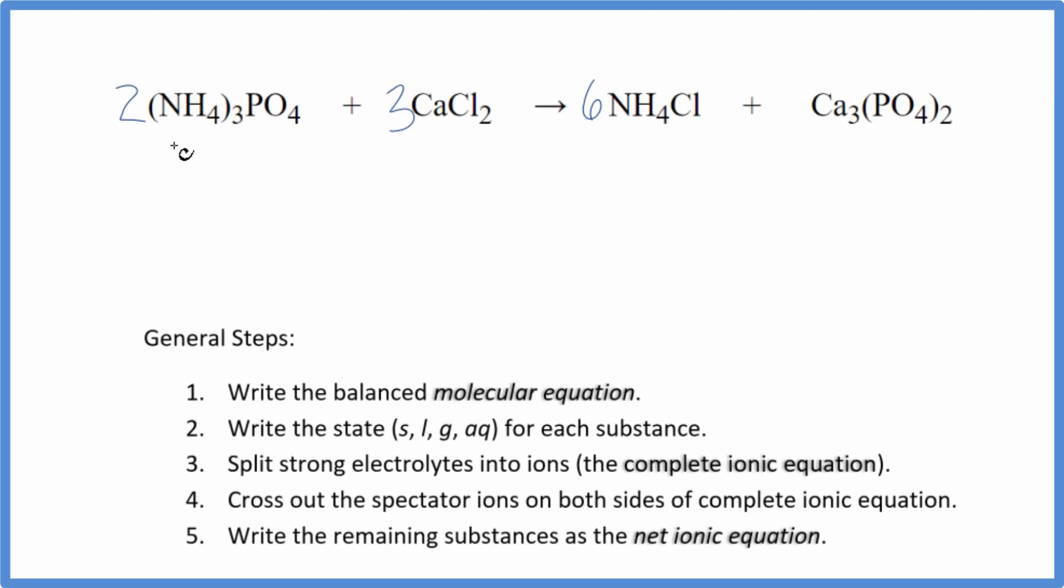In this video, we'll write the balanced net ionic equation for ammonium phosphate plus calcium chloride. So the first thing we do when we balance these net ionic equations, we balance the molecular equation. I've done that already here. If you need help balancing the molecular equation, there's a link in the description. After we have that balanced molecular equation, we can write the states.